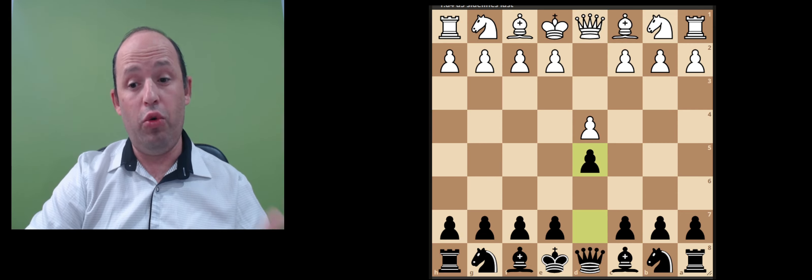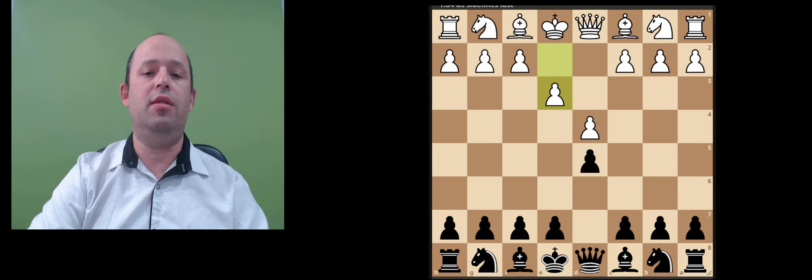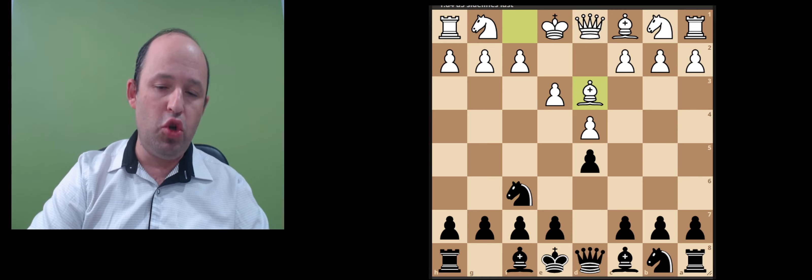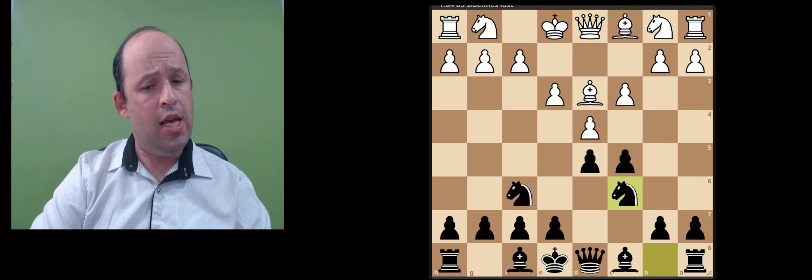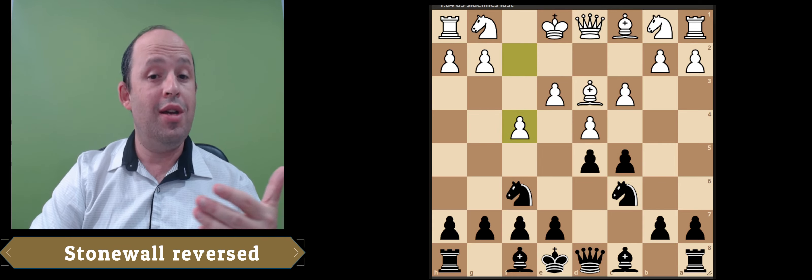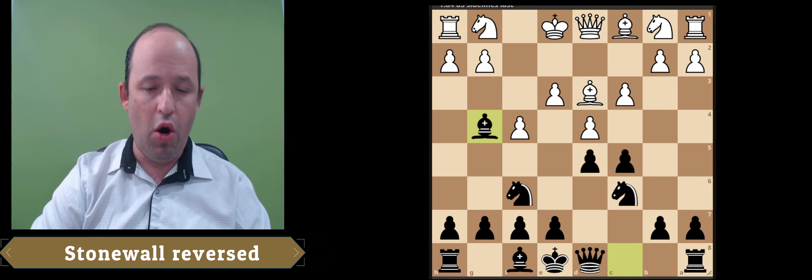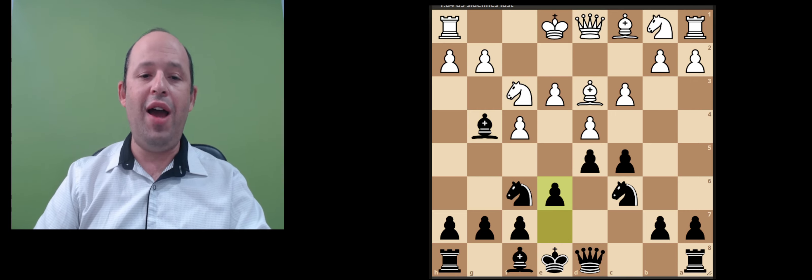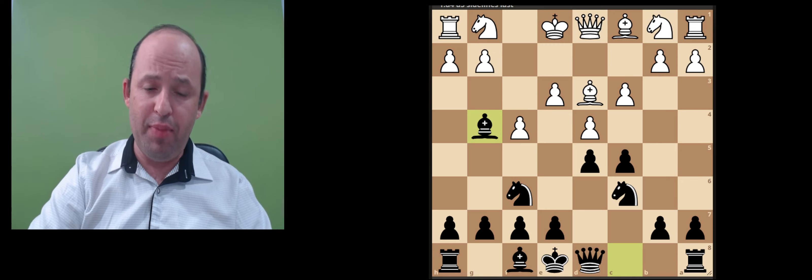There is a move e3, which basically in most cases will transpose to Colle-Zukertort. Sometimes White tries to delay move Knight f3 and they play Bishop d3. Now as I mentioned before, we have the opportunity to strike with c5, then c3 Knight c6, and now some people play a4, which is surprisingly a bad version even though it's tempo up. It's a Stonewall tempo up but we are able to bring our bishop out. I really like Black's position.